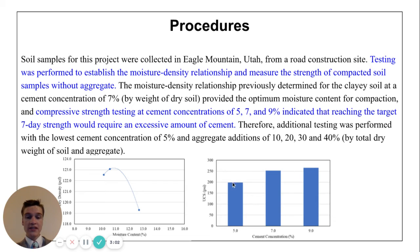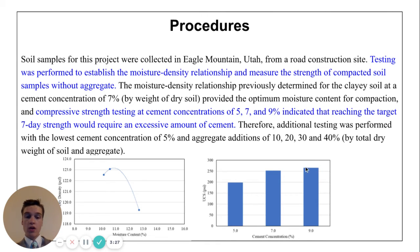This graph shows the compressive strength. We see that as the cement concentration increases, the pounds per square inch of load failure is also increasing. However, the Portland Cement Association recommends that a roadway with this treatment should have a load failure rate of 500 psi. And this soil, even at a very high value of 9% cement, is only half of what it needs to be. That means more testing is needed.